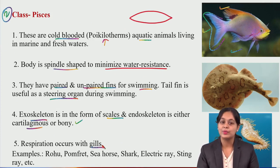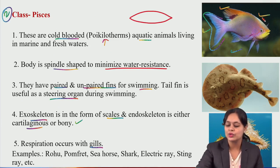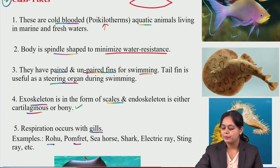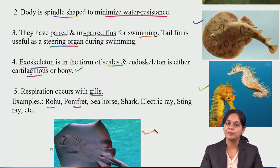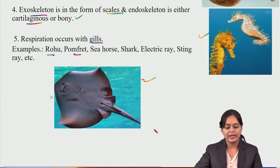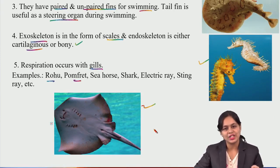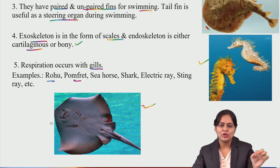Respiration in Pisces occurs through gills — gill slits are very useful for aquatic animals. Examples include Rohu, Pomfret, seahorse, stingray, electric ray, and shark. This covers the important characteristics of Pisces — cold-blooded, spindle-shaped, fins for swimming, scales as exoskeleton, and gills for respiration.